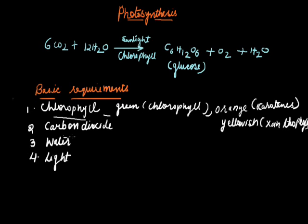The second most important basic requirement for photosynthesis is carbon dioxide. Land plants obtain it from the atmosphere while aquatic plants absorb the same from water. The atmosphere contains about 0.036% of carbon dioxide. It enters the leaves through stomata.